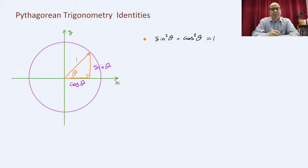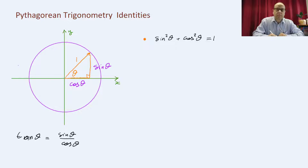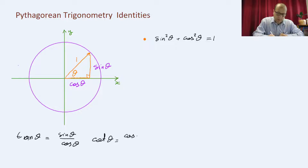Before I move to the second and the third identity, we note that tan theta is equal to sine theta over cos theta, and cot theta is equal to cos theta over sine theta.